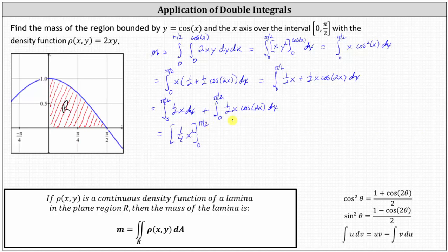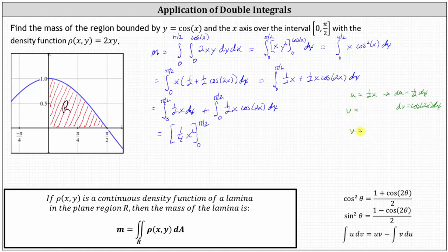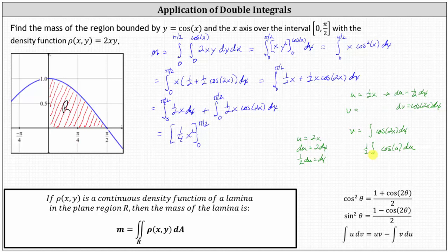For the second integral, we use integration by parts with the formula shown below. Let u equals one-half x and dv equals cosine two x dx. Differentiating, du equals one-half dx. To find v, we integrate cosine two x dx using u-substitution where u equals two x, du equals two dx, so one-half du equals dx. The integral becomes one-half cosine u du, giving an anti-derivative of one-half sine u, so v equals one-half sine two x.